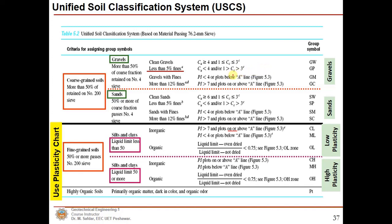In the Unified Soil Classification System, we classify based on the percent passing: if more than 50 percent is retained on the No. 200 sieve, those particles are coarse-grained soils; if 50 percent or more passes the No. 200 sieve, that is fine-grained soil. For further division: if more than 50 percent of the coarse fraction is retained on the No. 4 sieve, those particles are gravels; if 50 percent or more of the coarse fraction passes the No. 4 sieve, those particles are sands.